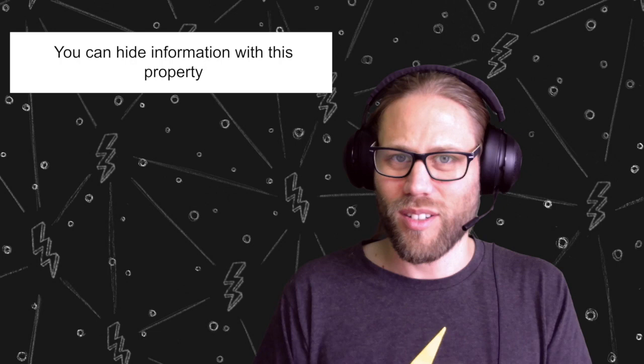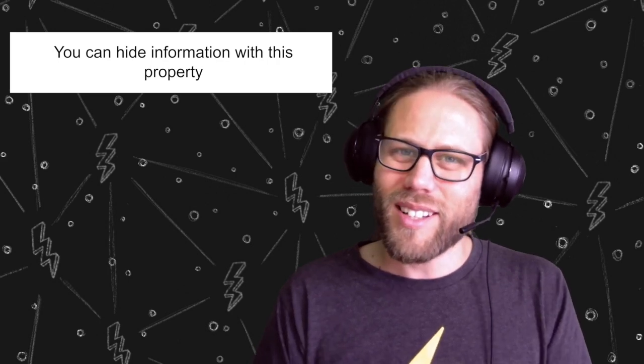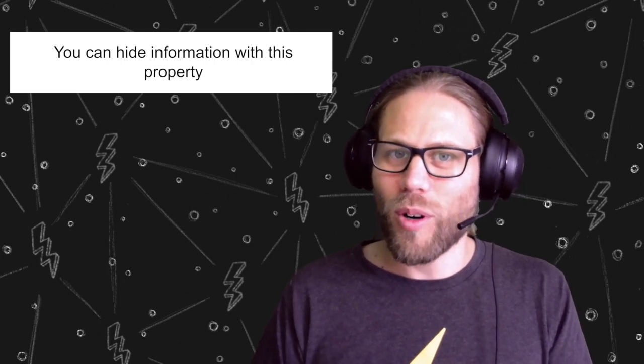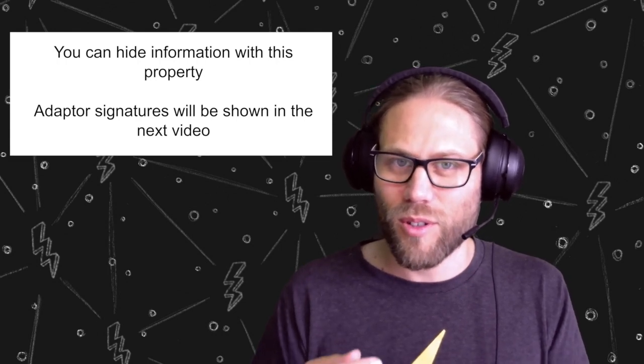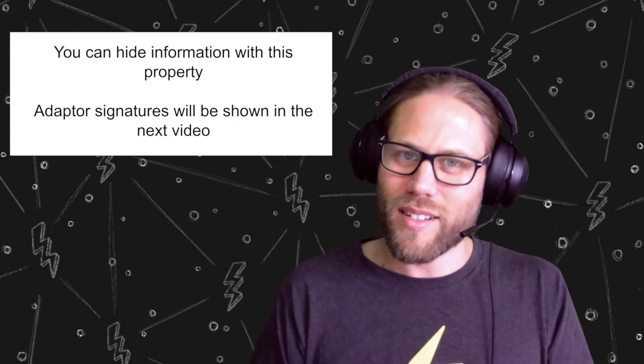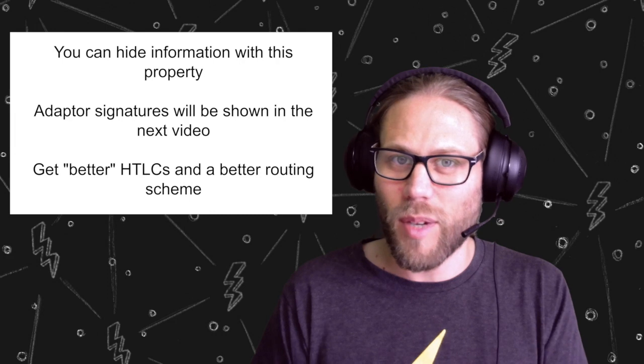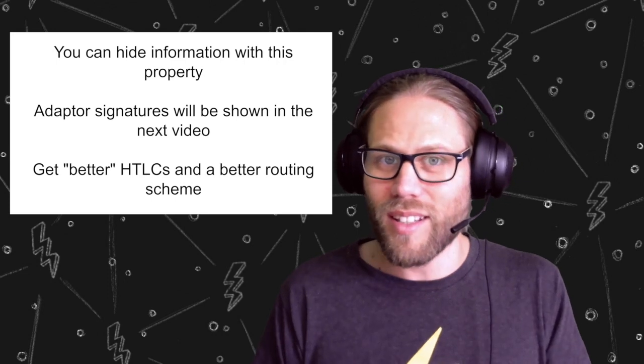And the last thing that is really cool about this is we can actually use this mechanism to hide even more information in this multi-signature wallet. Because if people want to use this mechanism they have to exchange partial signatures, and later if you publish a different multi-sig output then you can hide some more information in this, and this is called adapter signatures. This will be my next video so you should definitely subscribe to my channel if you're interested in that. And these adapter signatures can actually be used to get rid of HTLCs in lightning. We can get a much cooler routing scheme. It's still completely trustless and it's a really crazy and cool thing.